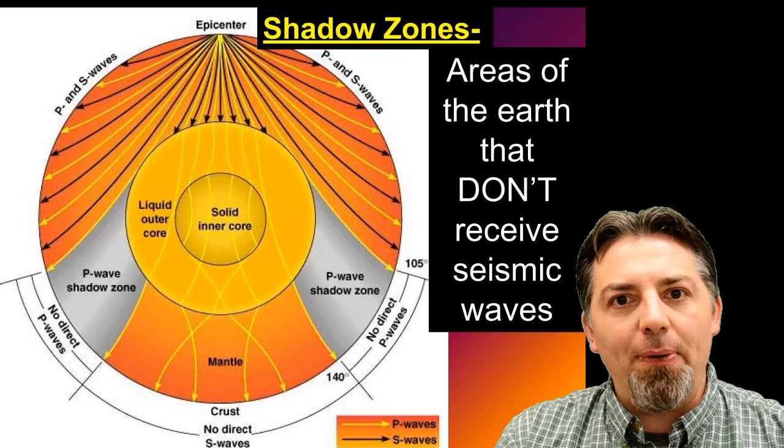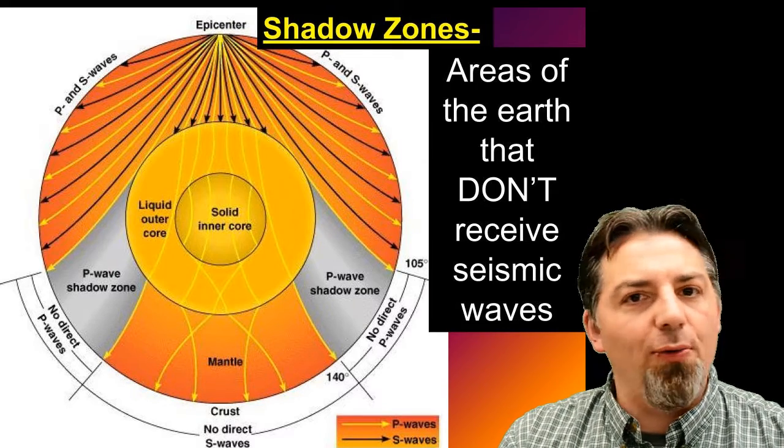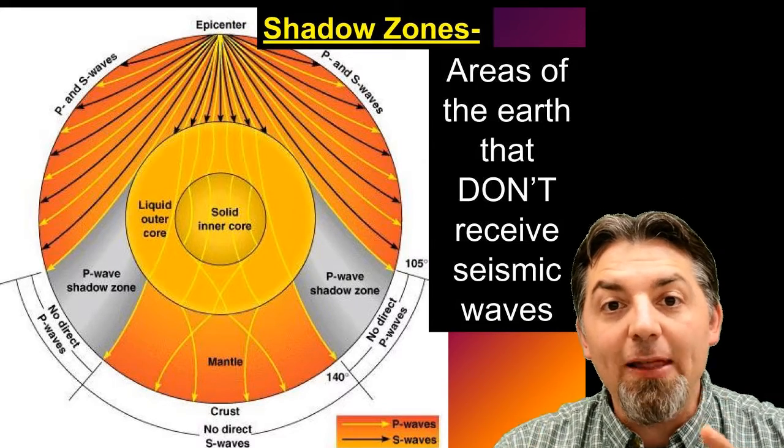And what happens is, if the Earth was just sort of one material, those waves would just travel all the way through and would never stop until they hit the other side, and we could record them from the other side, which is pretty cool. But what happens is, some of those waves stop. They don't travel all the way through the inside of the Earth. Something stops them.